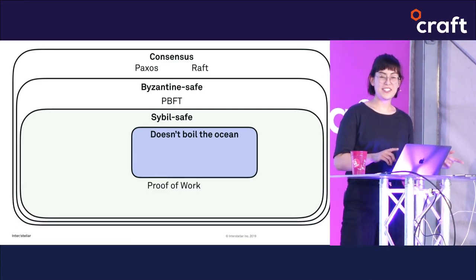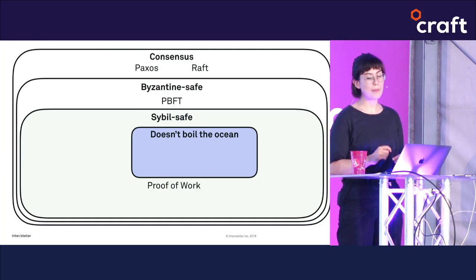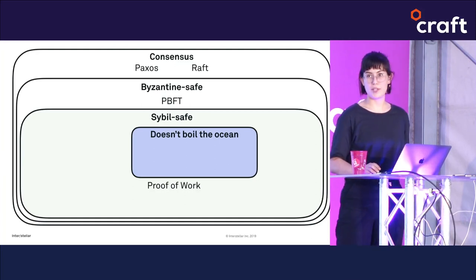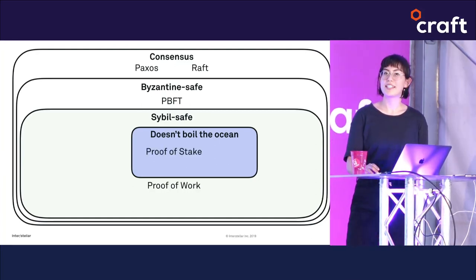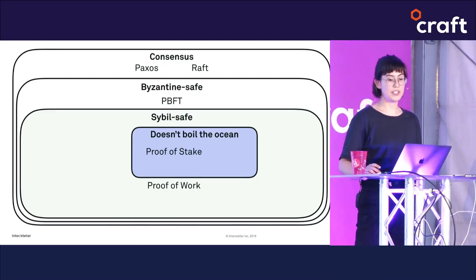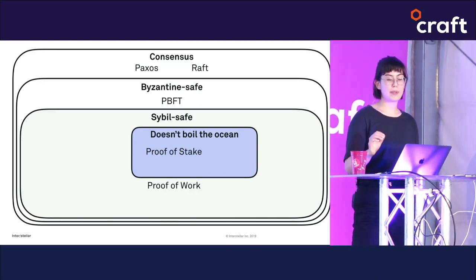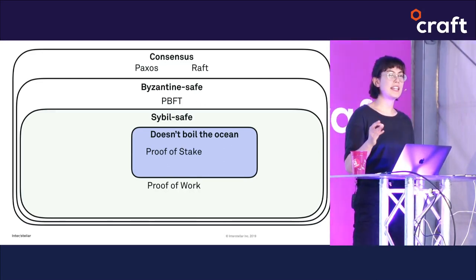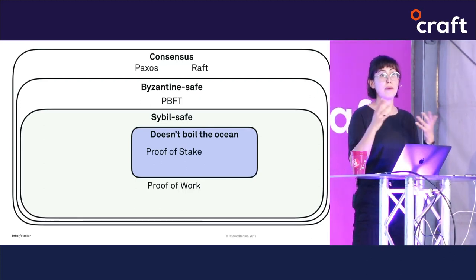At this point we might look at our little universe and create a new target: is it possible to have a consensus algorithm that is both Sybil-safe and doesn't boil the ocean? It turns out yes. One of the most popularly mentioned options is proof of stake, which is the consensus flavor that Ethereum is moving to in its final stage. Proof of stake isn't a single algorithm but really a family of them.